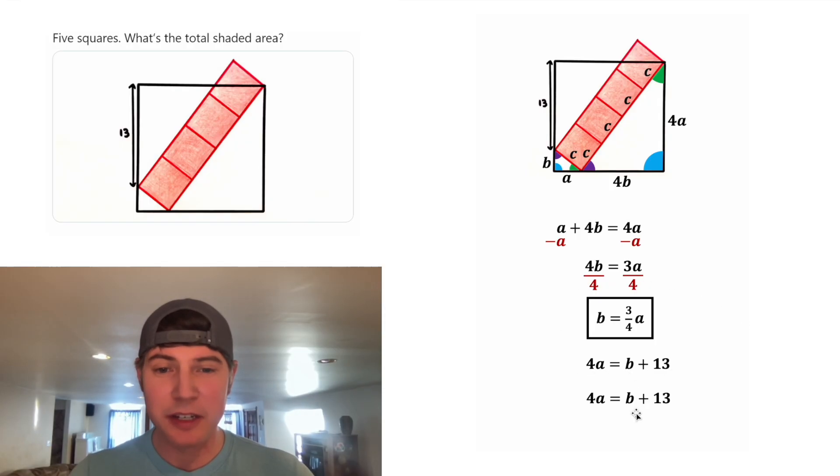Next, let's look at this equation. Let's copy it down. And in the place of the B, we're going to plug in three fourths A. And then we want to combine like terms, so let's subtract three fourths A from both sides of the equation.